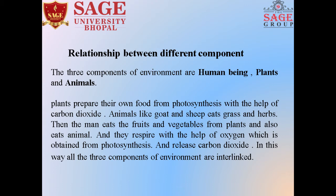Plants prepare their own food through photosynthesis with the help of carbon dioxide and sunlight. Animals like goat and sheep eat grass and herbs. Then men eat fruits and vegetables from plants and also eat animals. In this way, plants are dependent on sunlight, animals dependent on plants, and human beings dependent on both plants and animals.